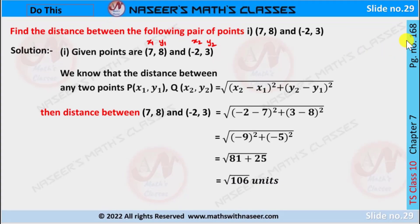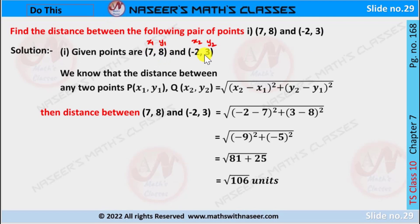Page 168, chapter 7, coordinate geometry. Find the distance between the following pair of points. Two points are given: 7 comma 8 and minus 2 comma 3. Let the coordinates of the first point be x1, y1 and the second point be x2, y2.